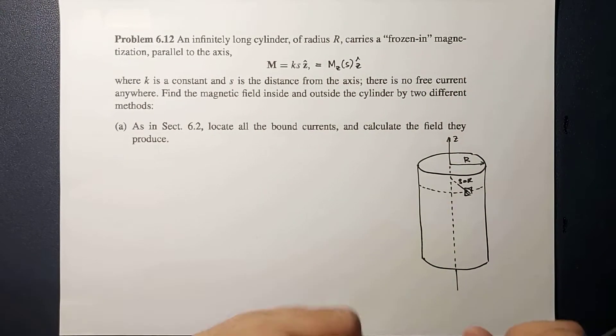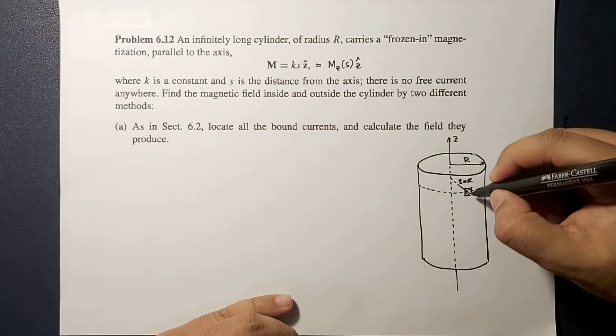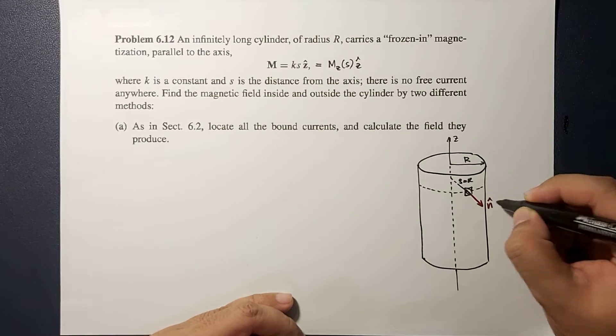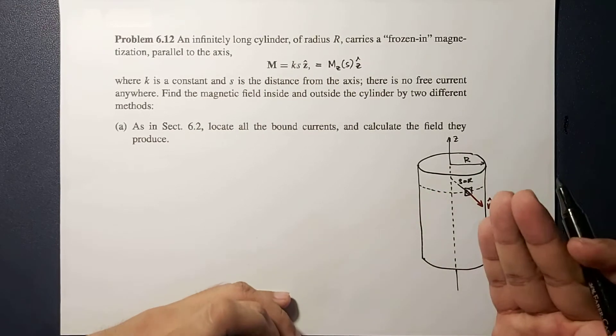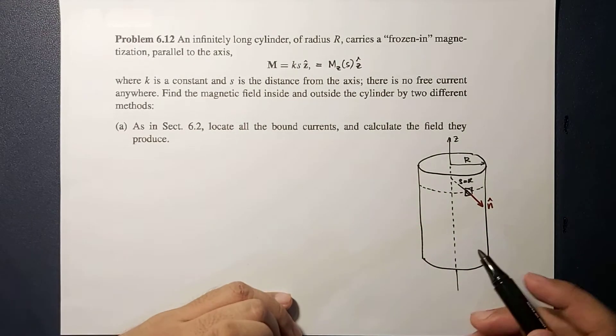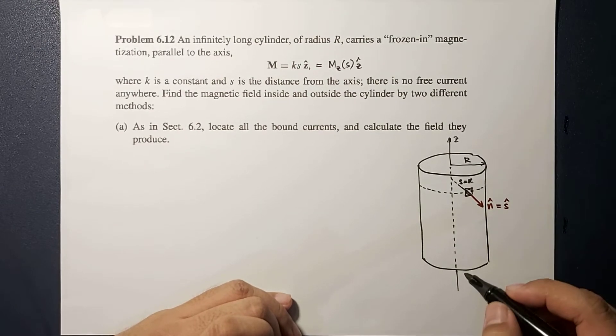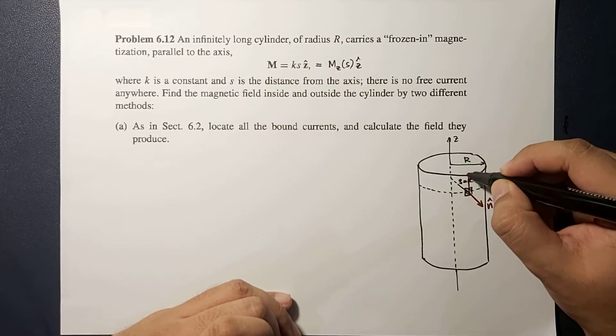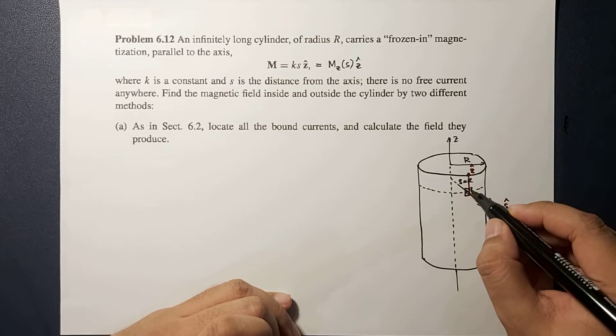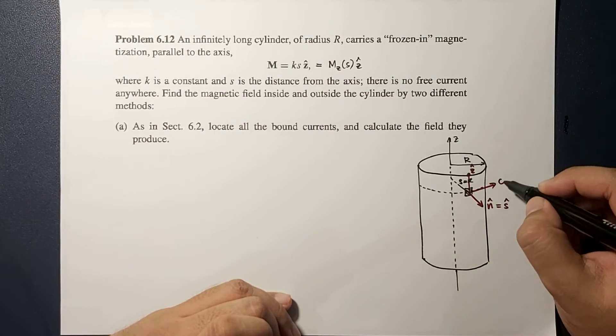So that means this direction would be the normal direction to the surface area around the cylinder, and this is equal to S hat. Since this direction is Z hat, therefore this direction is φ hat.